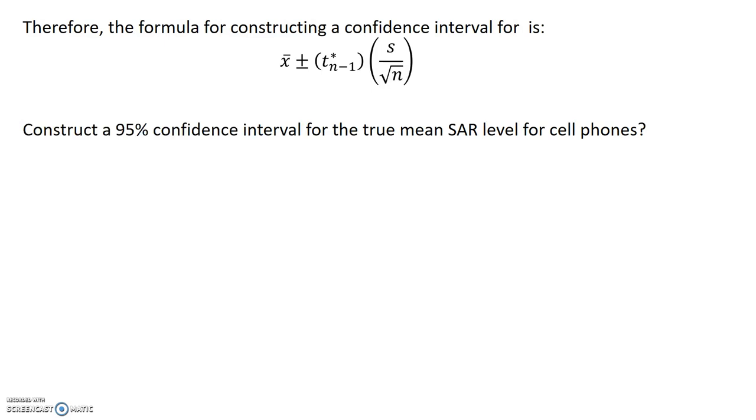For this example, we'll construct a 95% confidence interval for the true mean SAR level for cell phones. Now, to start, what I need to do is remind myself of the summary statistics for our problem. I go to R and run the favstats function to obtain the mean and the standard deviation, and I get the sample size using that function.